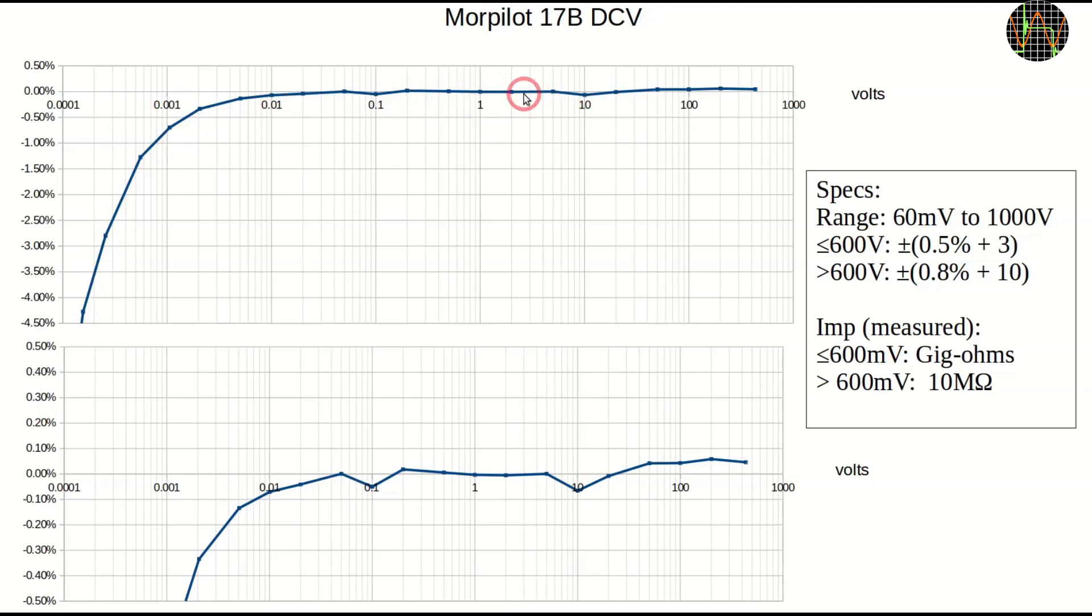With that out of the way, I standardized on showing in the upper graph the complete measurement I did, while the lower one is the same graph but scaled to the specific error range limit of ±0.5% in this case. The Morpilot easily meets its specs. It is really quite accurate down to 2mV thanks to its dedicated mV range.